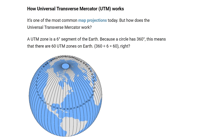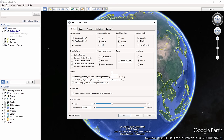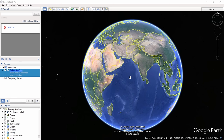A UTM zone is a 6-degree segment of the Earth. Since a circle has 360 degrees, there are 60 UTM zones on Earth. Next, the unit of measurement should be selected as meters/kilometers, because we're going to use the same units in AutoCAD. Then click OK.